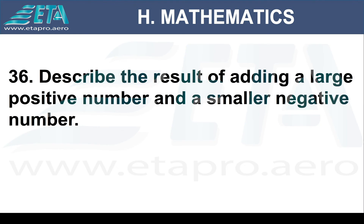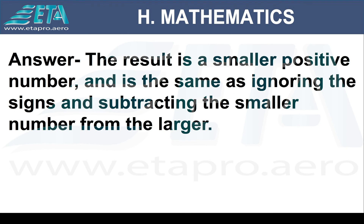Describe the result of adding a large positive number and a small negative number. The result is a smaller positive number, and is the same as ignoring the signs and subtracting the smaller number from the larger.